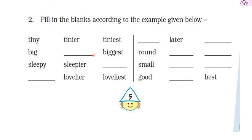We have to fill these blanks according to the example given in the first one. The first one is: tiny, tinier, tiniest. These are adjectives in three degrees of comparison — the first is the positive degree, the second is the comparative degree, and the last is the superlative degree.